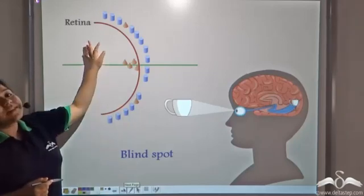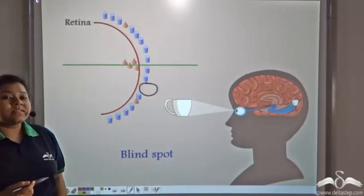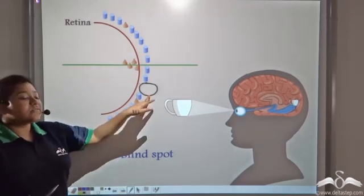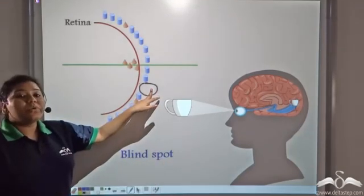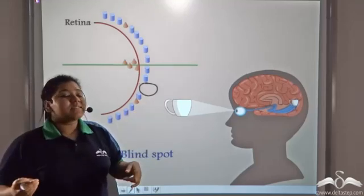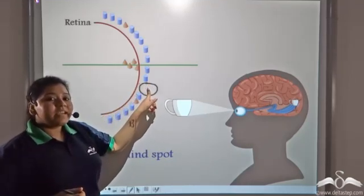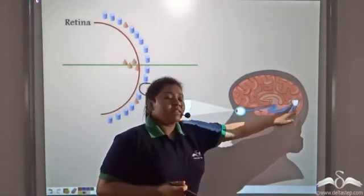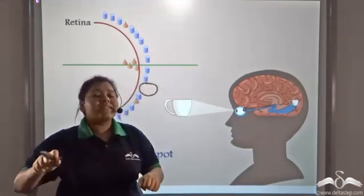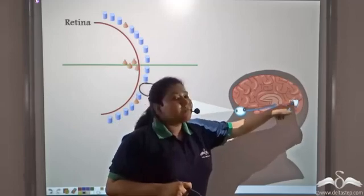If you notice carefully, you will see that one area has neither cone cells nor rod cells — it does not have any sensory receptors. This spot is known as the blind spot, and there is no vision in the blind spot because all the axons of the sensory receptors present on the retina bundle here and from here they go to the occipital lobe of the brain.